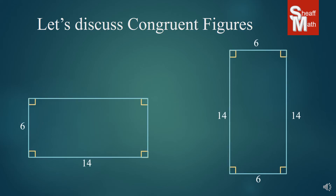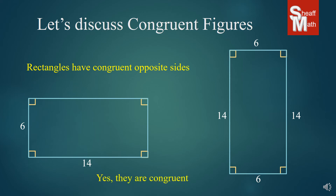Now here we have what appears to be two rectangles. Because of the squares in the corners, they have 90-degree angles. On the right side we have all four sides: 6, 14, 6, and 14. But on the left, we only have 6 and 14. Is this enough to prove that they're congruent? Well, actually it is, because rectangles have congruent opposite sides. This is something that we learned a long time ago. So 6 and 14 — the opposite of those is going to be 6 and 14 because it's a rectangle. And so we can say that yes, they are congruent.